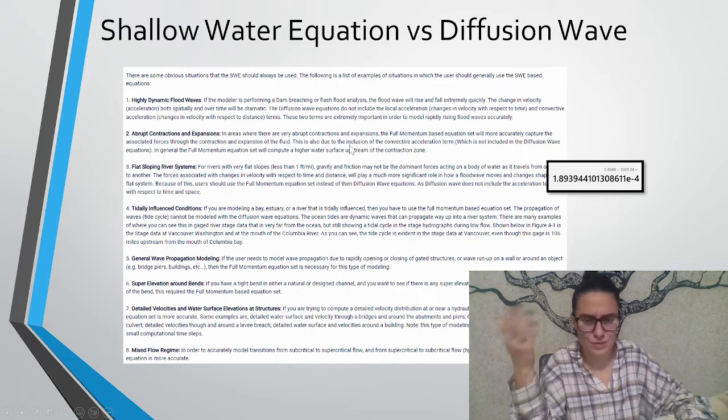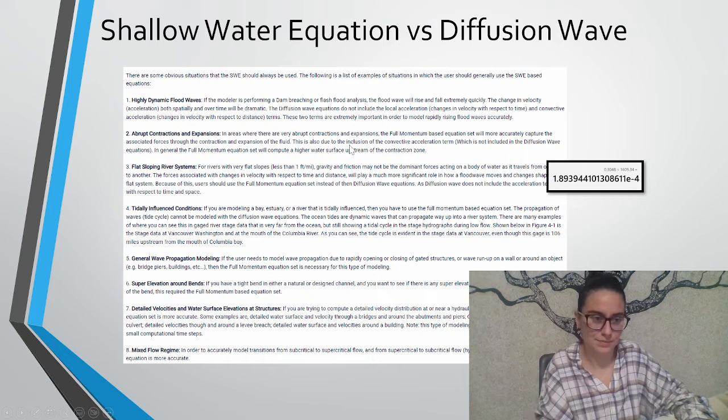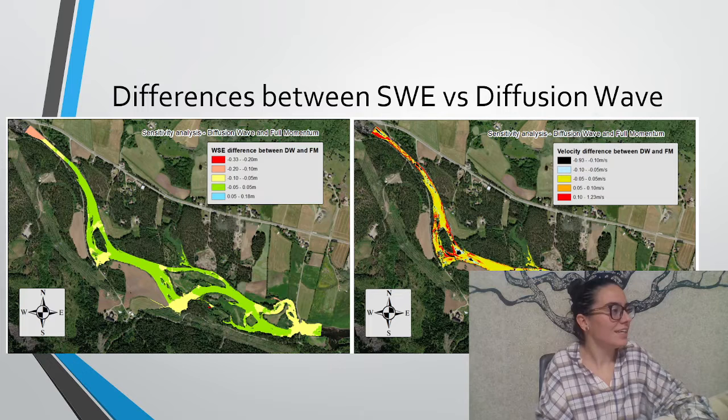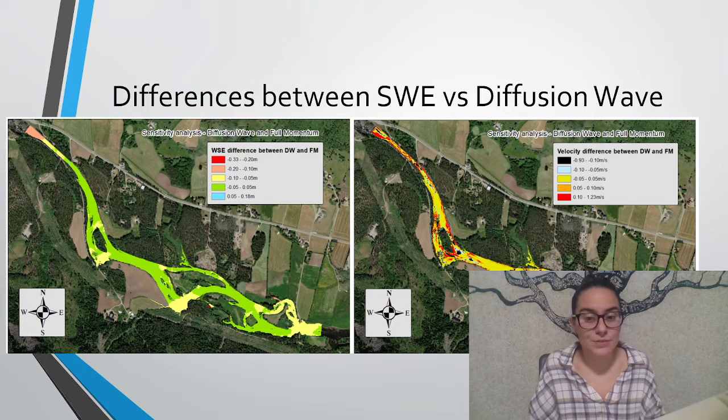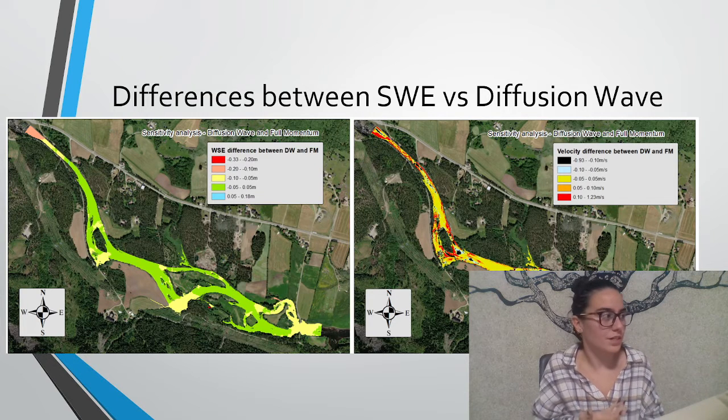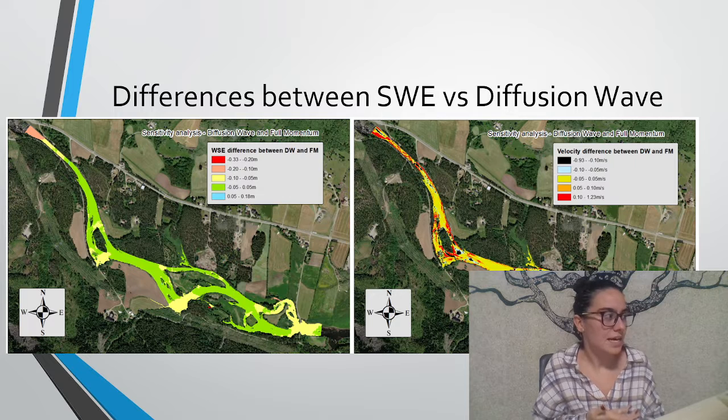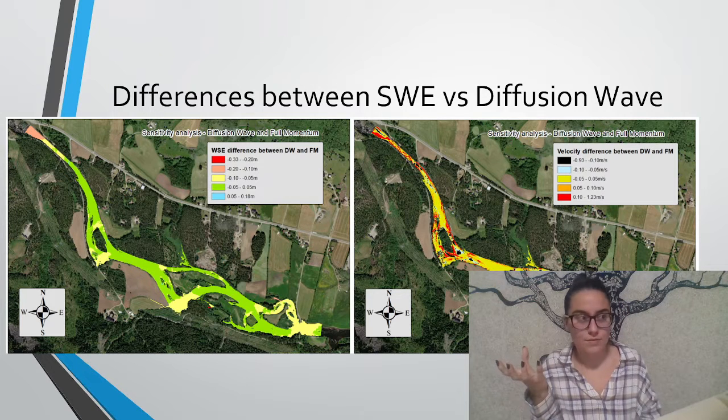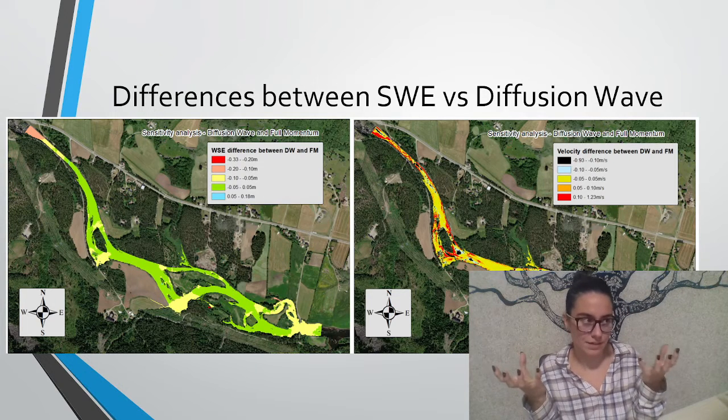As I said, I usually always use the original faster because they have improved a lot and it doesn't take so long. To finish, I wanted to show this model where I actually computed differences doing the same model with diffusion wave and the shallow water equation original faster.